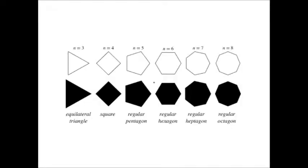Regular polygons are two-dimensional plane figures with at least three straight sides and angles in which all side lengths are equal and all angle measures are equal.